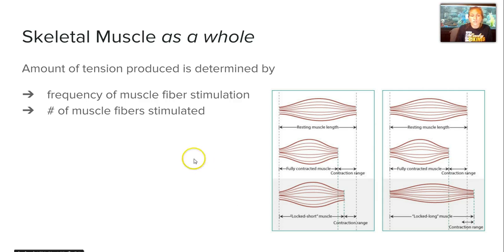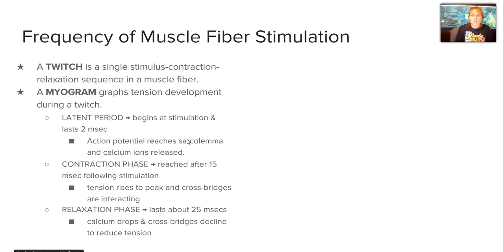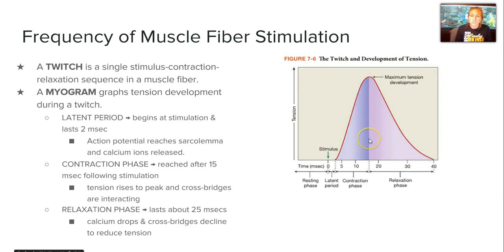The overall tension of skeletal muscle is determined by the frequency of muscle fiber stimulation and the number of muscle fibers stimulated. A single stimulus contraction-relaxation sequence in a muscle fiber is called a twitch. A myogram shows the phases of that twitch: the latent period, which lasts about 2 milliseconds, indicates that the action potential has reached the sarcolemma and calcium ions have released; then the contraction phase, lasting about 15 milliseconds, where tension rises and peaks; and finally the relaxation phase, which lasts the longest at about 25 milliseconds, where calcium drops and crossbridges decline, reducing tension.